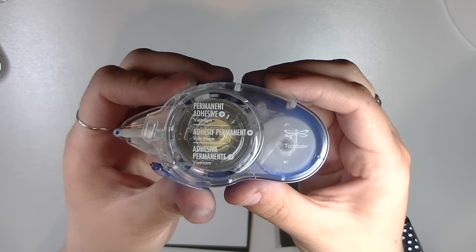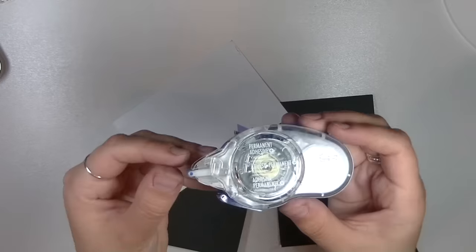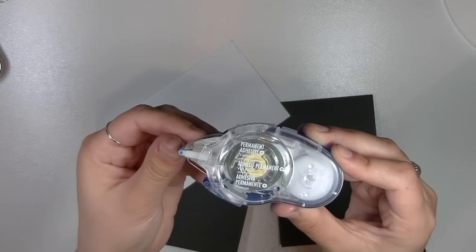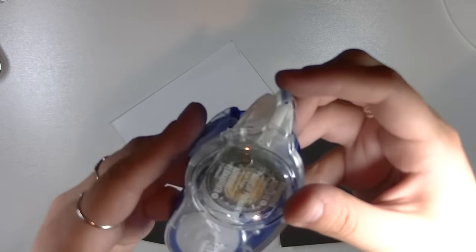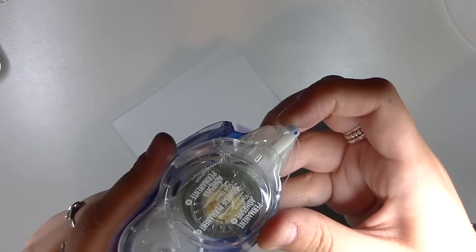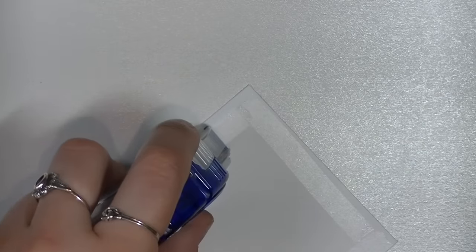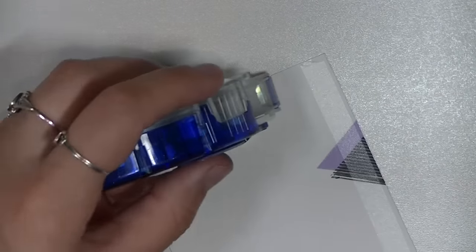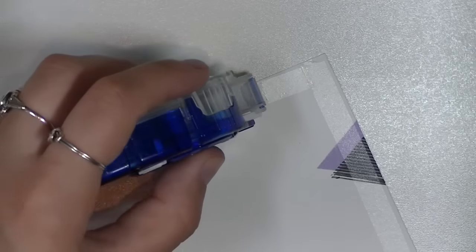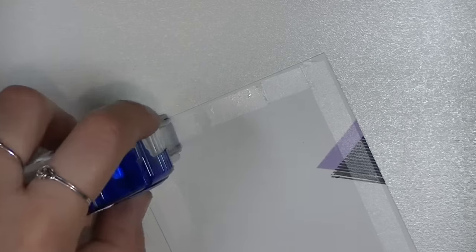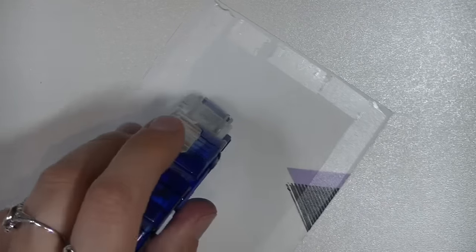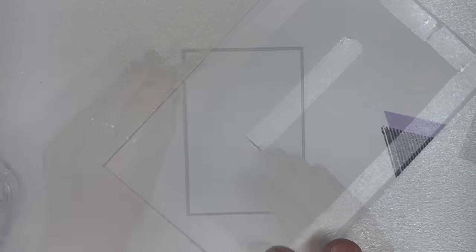I'll be using this new Tombow Mono Adhesive Plus Permanent. Here I'm just showing you that the applicator actually moves back and forth. It has a unique instant start system that advances the adhesive on the roll to the tip after every use, which ensures an instant start exactly where you place down every time. You can see in this video that it's so quick and runs smoothly.